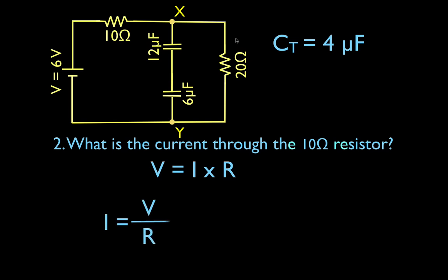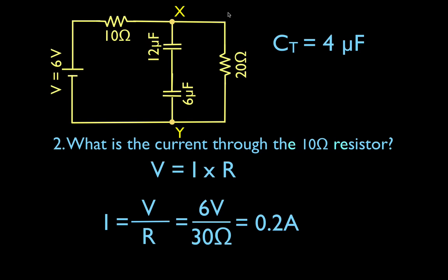We know the voltage — there's only one voltage, which is 6 volts. We have to use the total resistance. Because these two resistors are in series, we just add them: 10 and 20 is 30. So the current is 6 divided by 30, which is 0.25 amps. There's only one branch, so the current through this resistor and this resistor and any point in the outer branch is 0.25 amps.